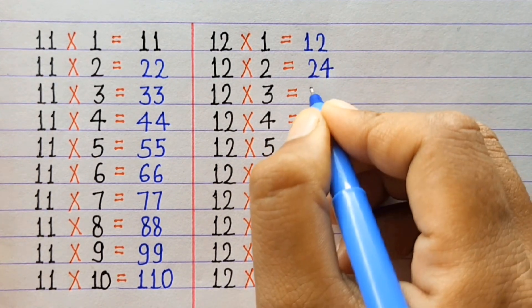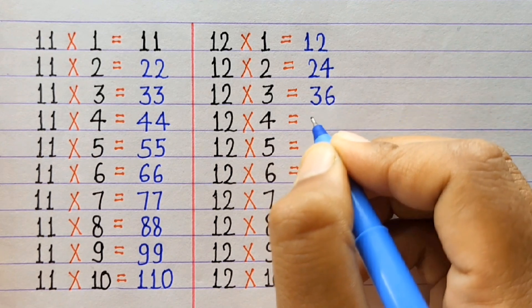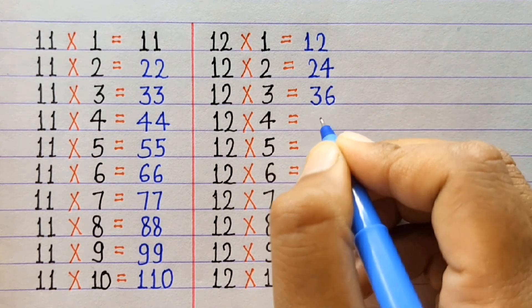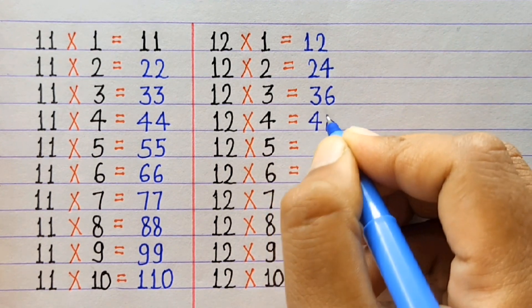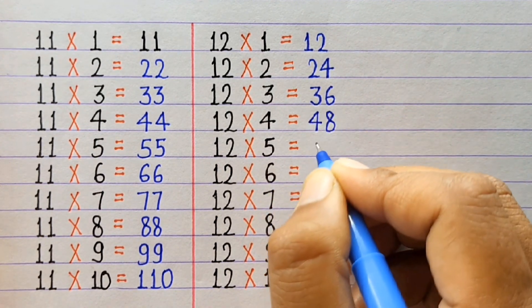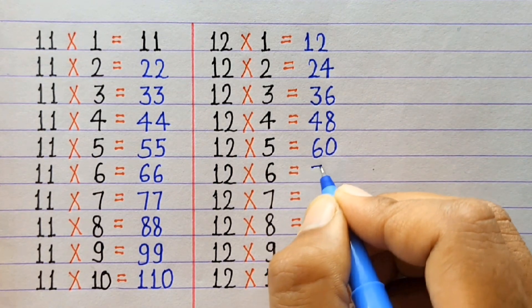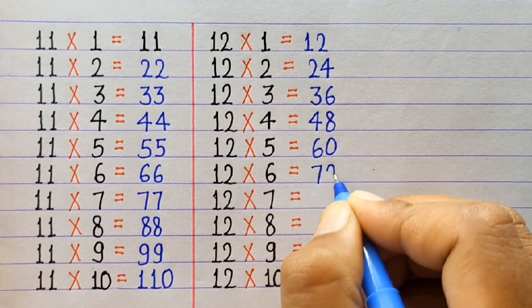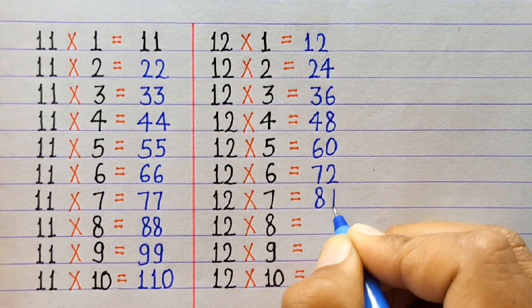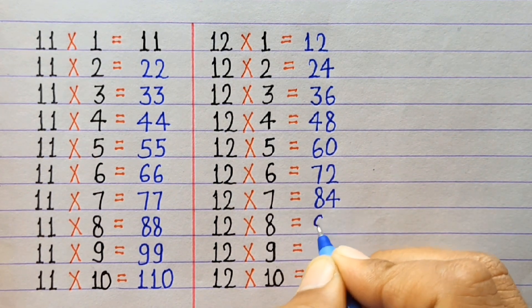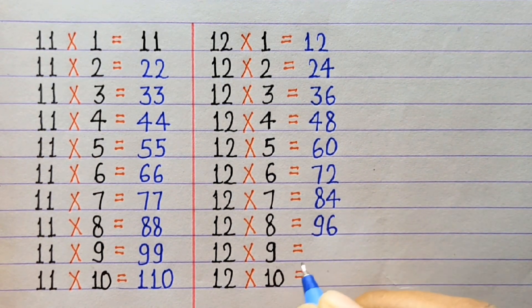12×1=12, 12×2=24, 12×3=36, 12×4=48, 12×5=60, 12×6=72, 12×7=84.